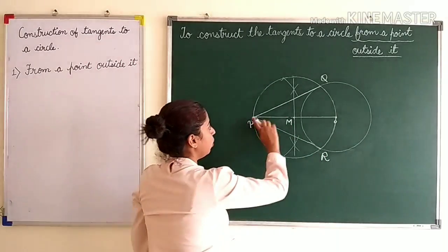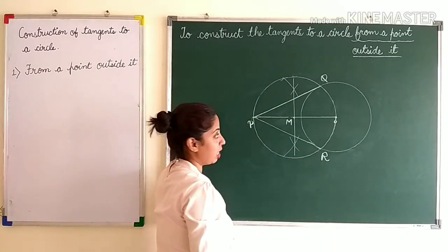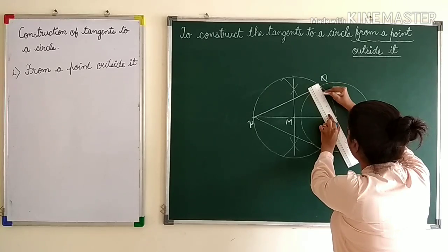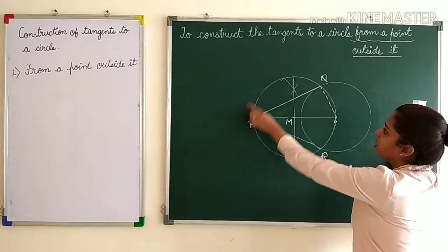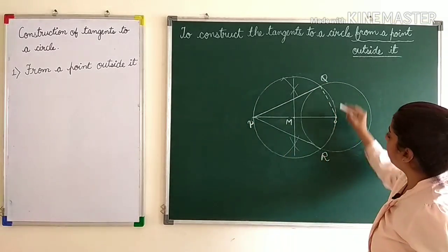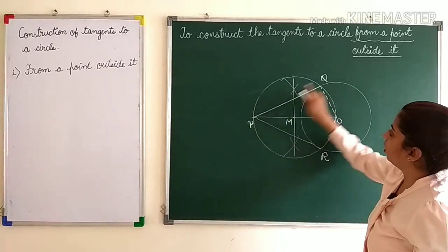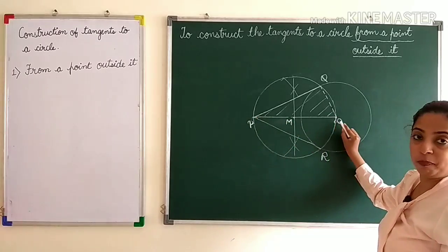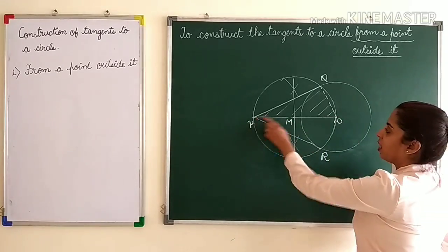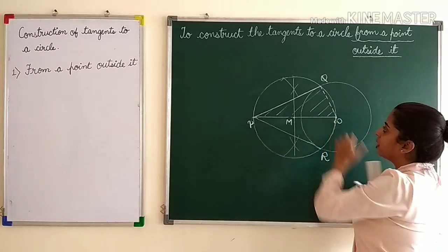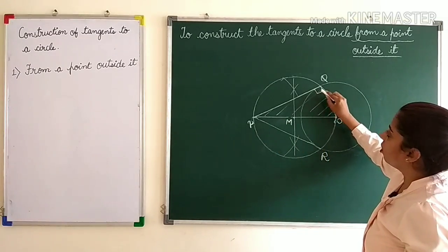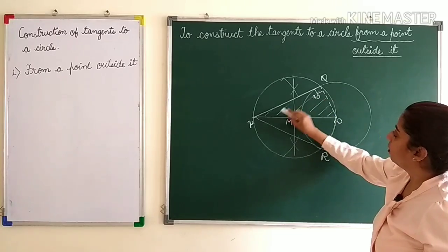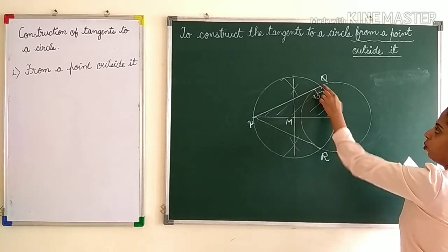Now dear students, I will explain why PQ is a tangent. So if I join OQ by a dotted line. You can see the triangle OPQ. So you can see that PO is a diameter and a diameter makes an angle of 90 degrees on the circle. So this angle is 90 degrees.